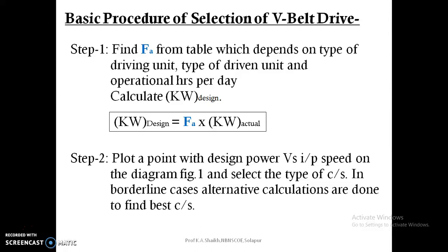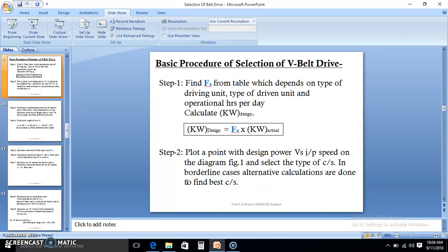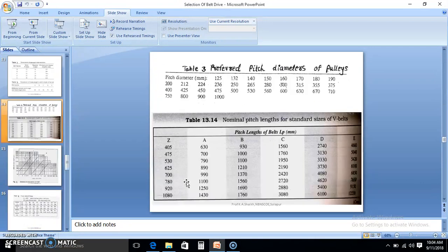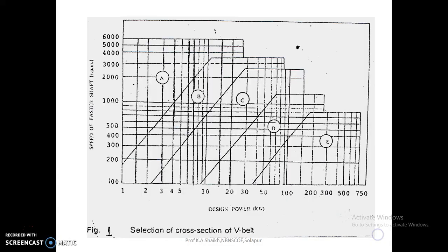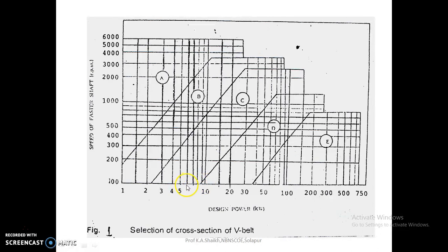Step number two: select the cross-section type. The V-belt has a trapezoidal section with a certain width and thickness, selected from standard charts. This chart is a logarithmic plot. For our kilowatt design of 6 kilowatt and input speed of 1440 RPM — between the 1000 and 2000 RPM marks — the design point falls in the zone of type B cross section.